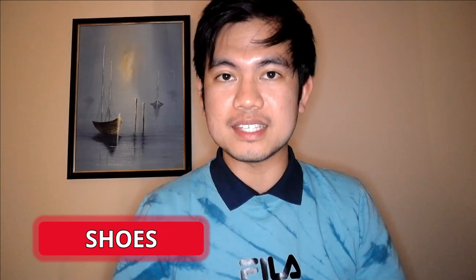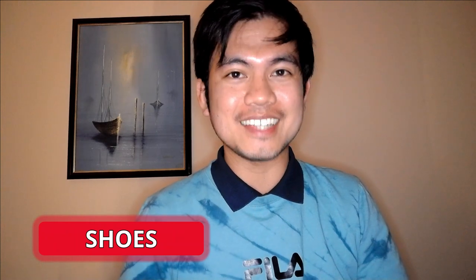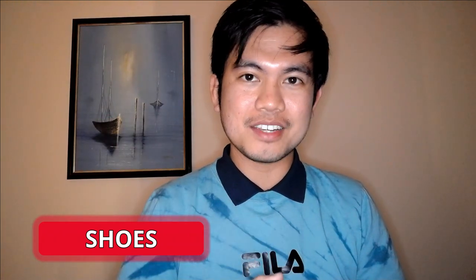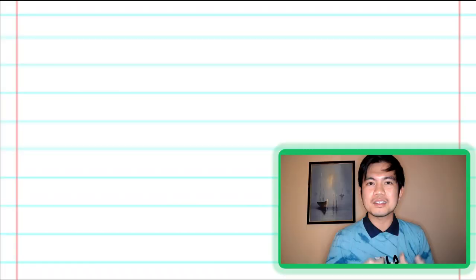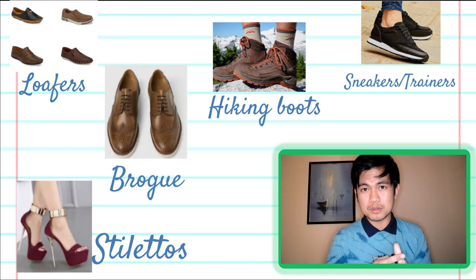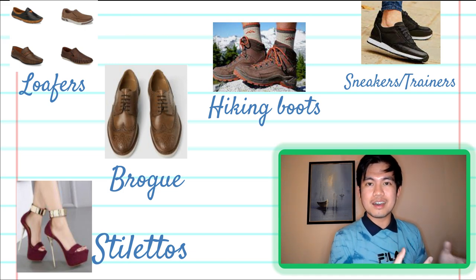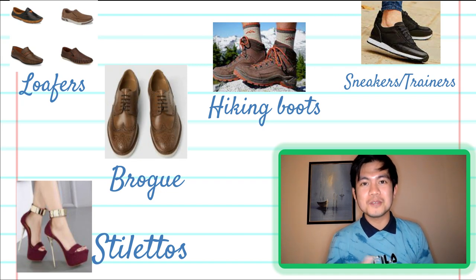Next is shoes — actually the topic I got when I took the actual IELTS speaking test. We need to know different types of shoes to provide topic vocabulary to our examiner and target the criterion of lexical resource, which is your vocabulary knowledge. Some types of shoes are loafers, sneakers or trainers, hiking boots, brogues, stilettos, and many more. Knowing these types can help you focus on describing the kind of shoes you like, because you have reference. If you aren't familiar with the different types of shoes, you have to review them.